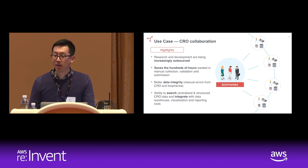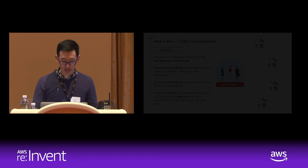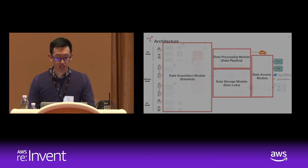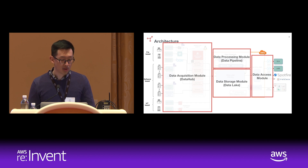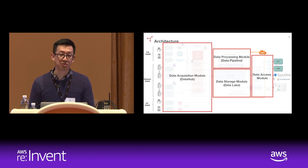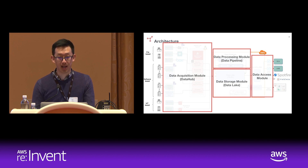Here is the technical architecture. On the left side you have the data source instruments: file-based instruments — or CROs — software-based instruments that don't necessarily produce a file and have some kind of software interface, and instruments like balances and pH meters that don't produce files nor provide an API. This entire architecture has four modules: a data acquisition module, a data storage module, a data processing module, and a data access module.